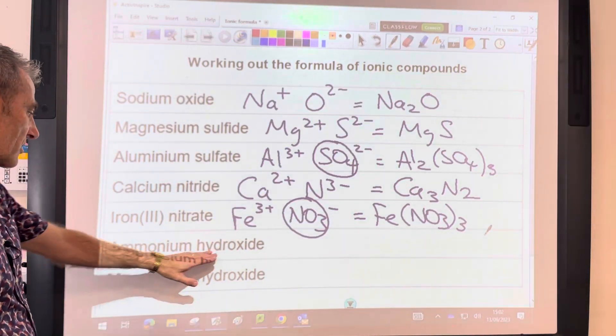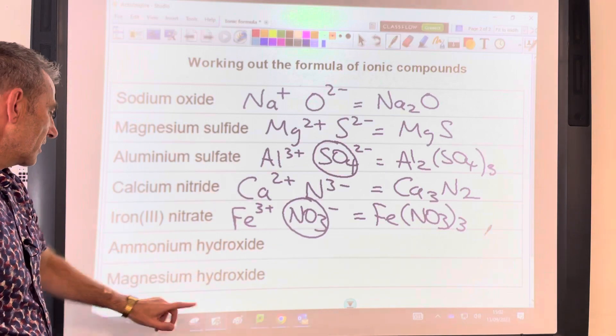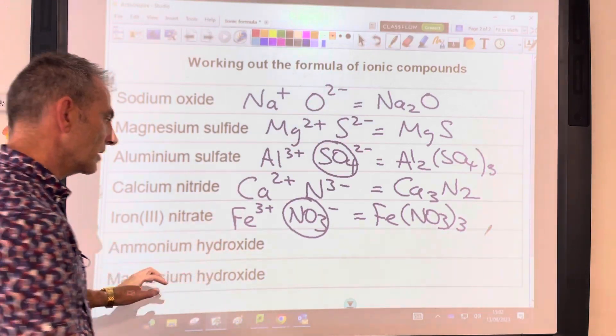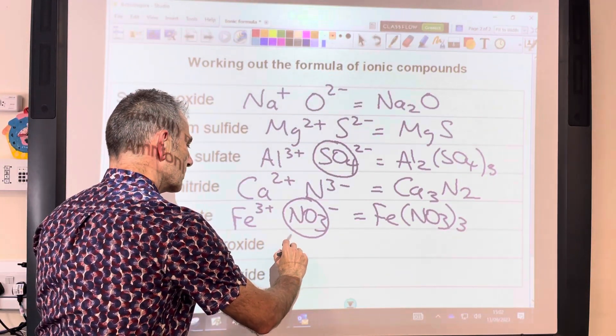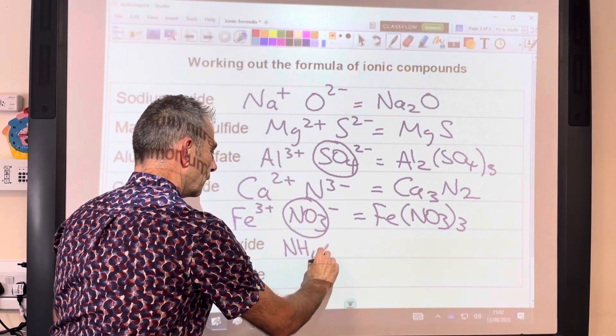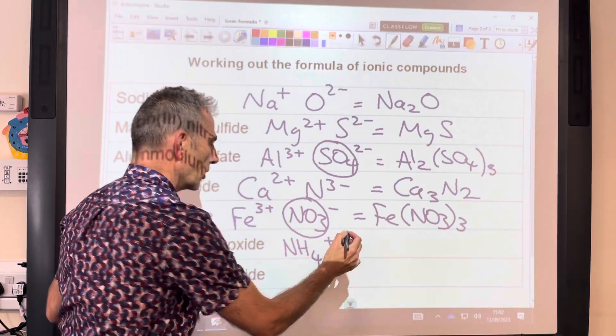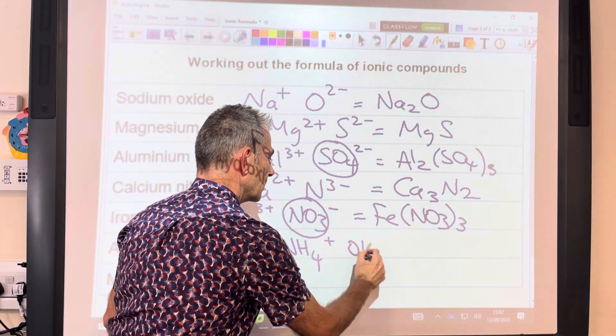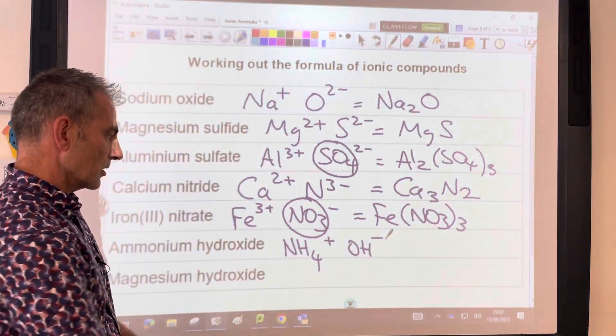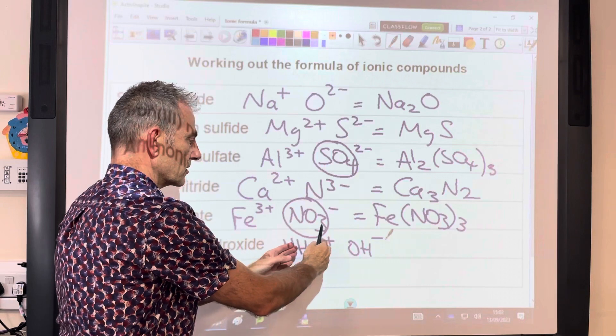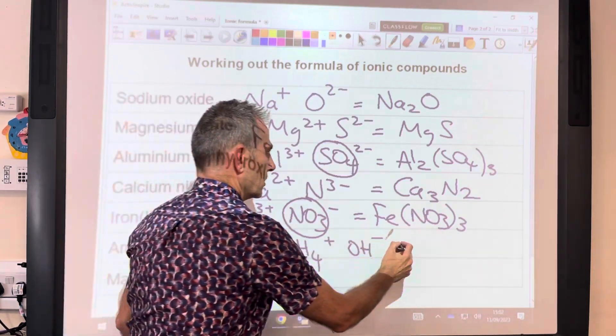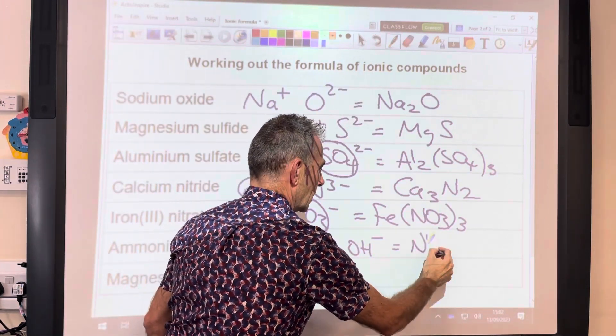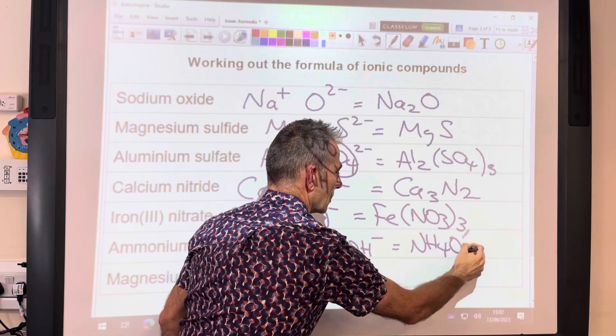The last two are just hydroxides. Ammonium hydroxide. The ammonium ion is NH4 with a 1 plus charge, and hydroxide is OH-. You can see we just need one of each because we've got 1 plus and 1 minus. So that's a nice easy one. NH4OH.